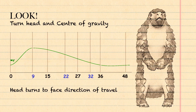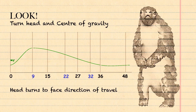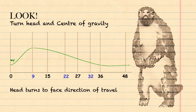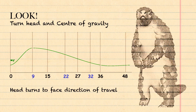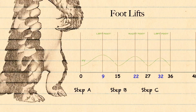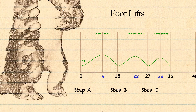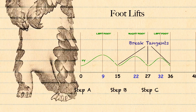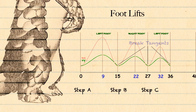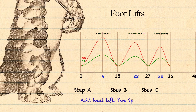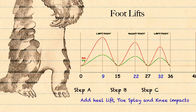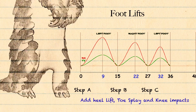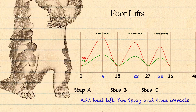Now we'll turn the head and the center of gravity towards the direction of travel. I'll start the head turn on frame 9 and it comes back to a perfect loop at the end. Now we start animating the feet — simulating the rise and fall of the feet. You'll notice here I've broken the tangents at the end so there's a little bit of a stamping. I then add some heel lift and toe splay and offset the little x of the knee just to give it a bit of a jolt.